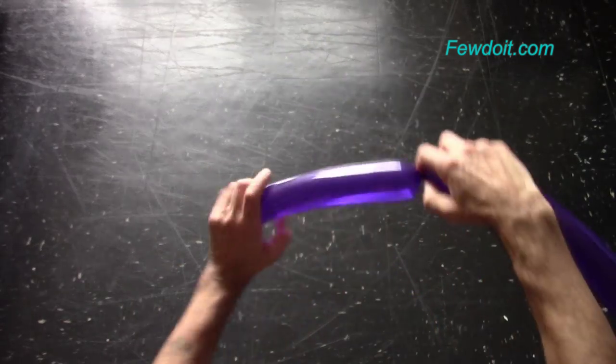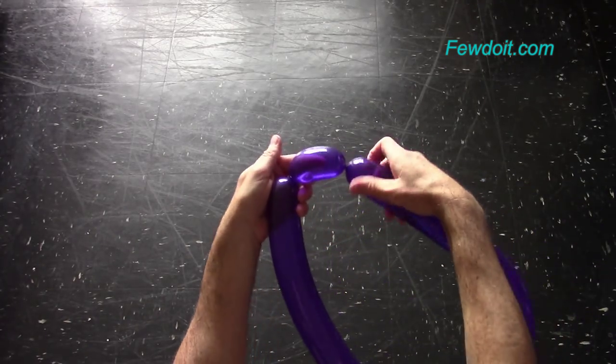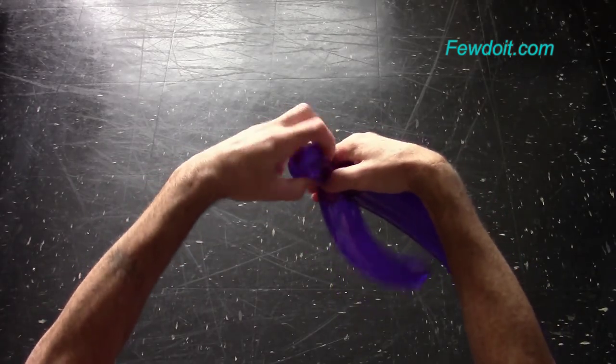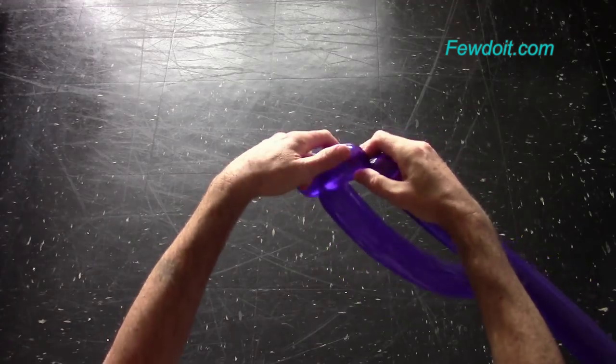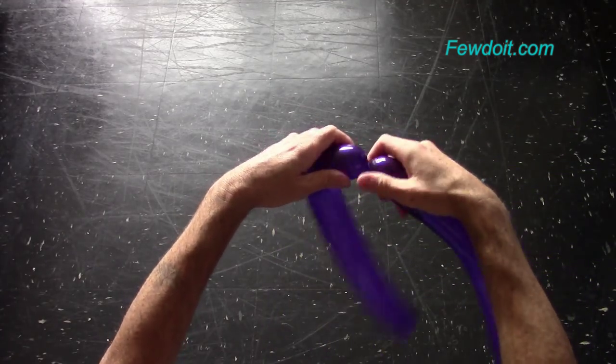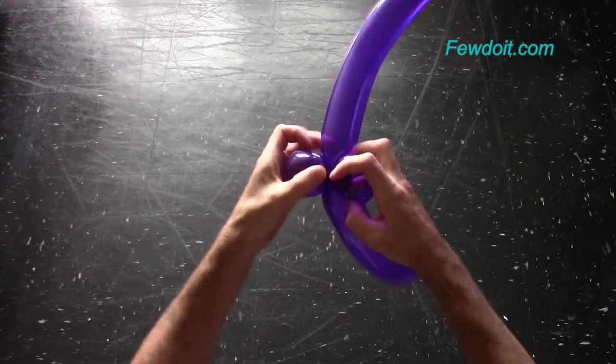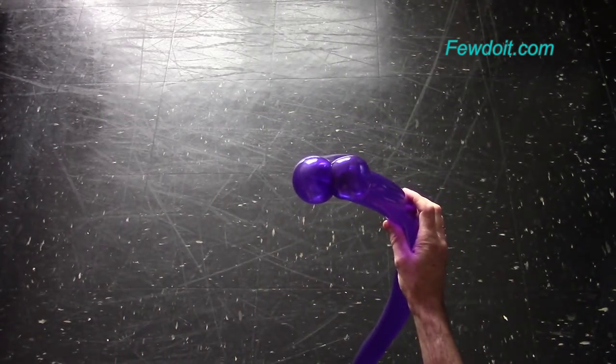Now I want to twist two eye bubbles. Twist the second soft about seven, maybe eight centimeters long bubble. Lock both ends of the second bubble in one lock twist. Twist the third soft about seven, eight centimeters long bubble the same size as the second bubble. Lock both ends of the third bubble in one lock twist. Make sure the second and third bubbles of the same size.